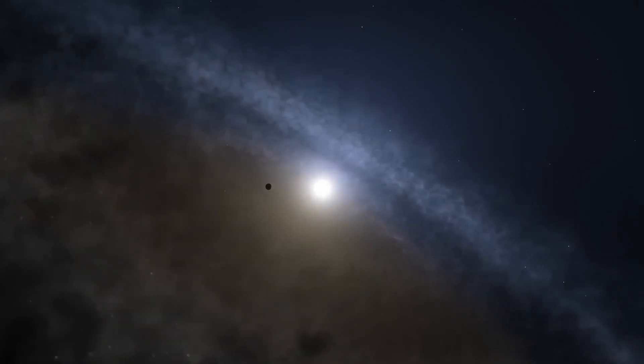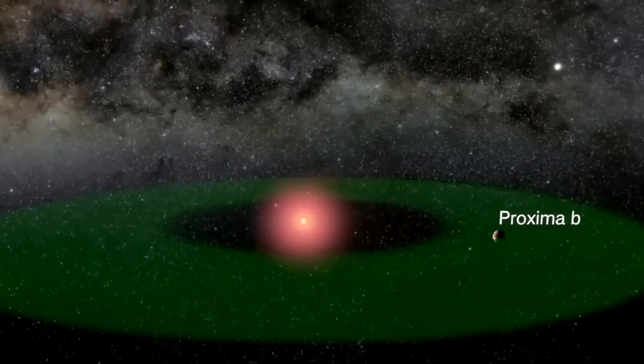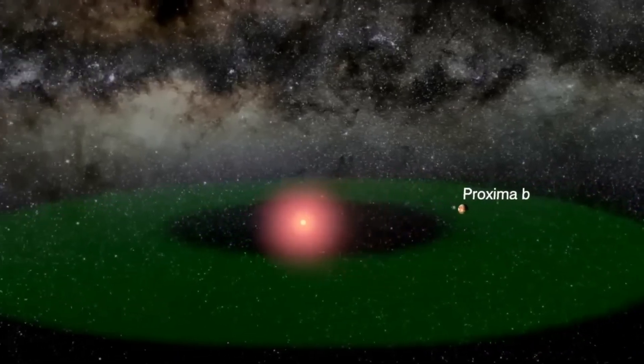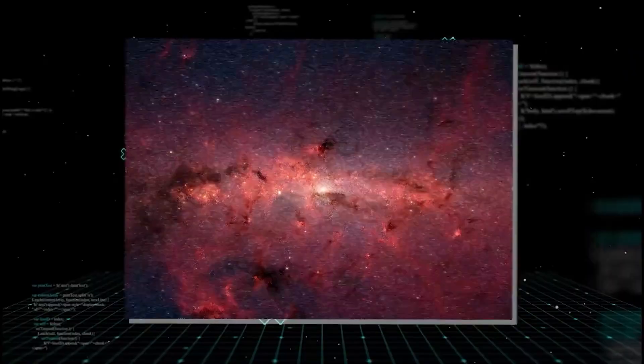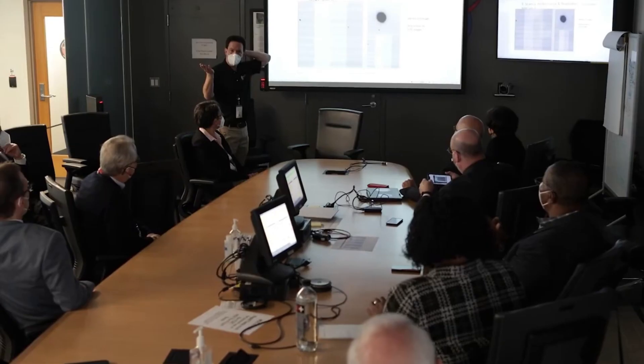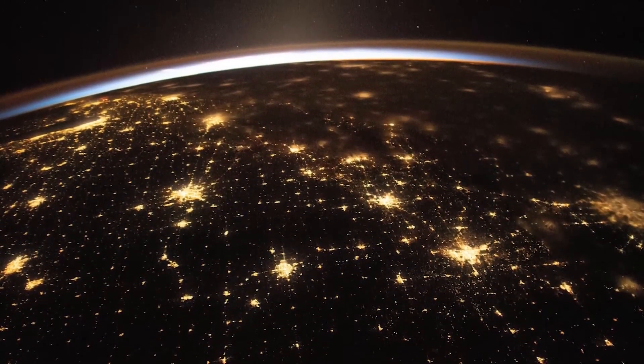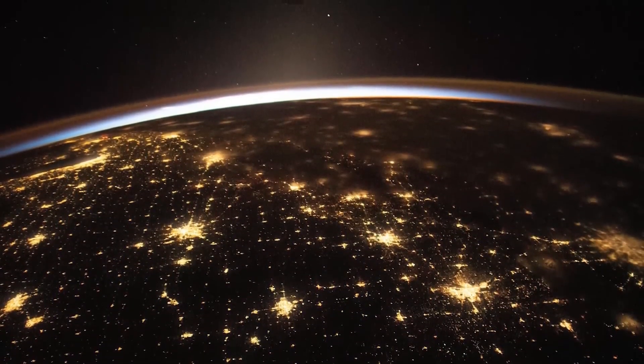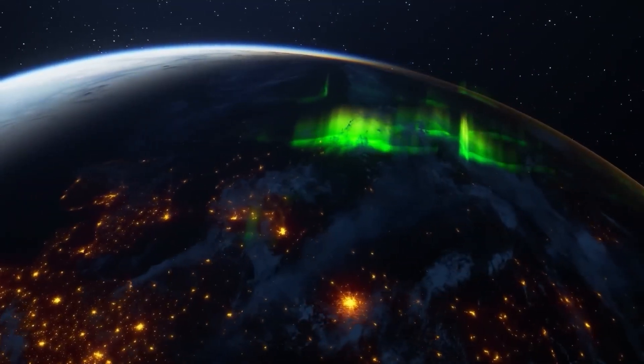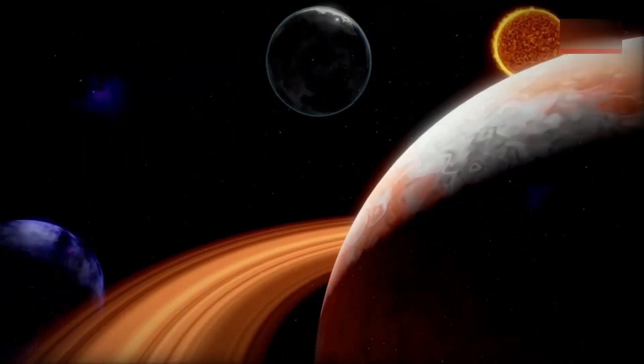Proxima b was discovered in 2016 by a team of astronomers using data from the European Southern Observatory's spectrograph. The planet was found through the radial velocity method, which detects small shifts in a star's position due to the gravitational tug of an orbiting planet. This discovery made Proxima b one of the most exciting planets in the search for extraterrestrial life. The planet orbits Proxima Centauri once every 11 Earth days, which means it's much closer to its star than Earth is to the sun. What makes Proxima b particularly intriguing is its location within the so-called habitable zone of its star, sometimes referred to as the Goldilocks zone. The habitable zone is the region around a star where conditions are just right for liquid water to exist on a planet's surface. Liquid water is considered one of the key ingredients for life as we know it.